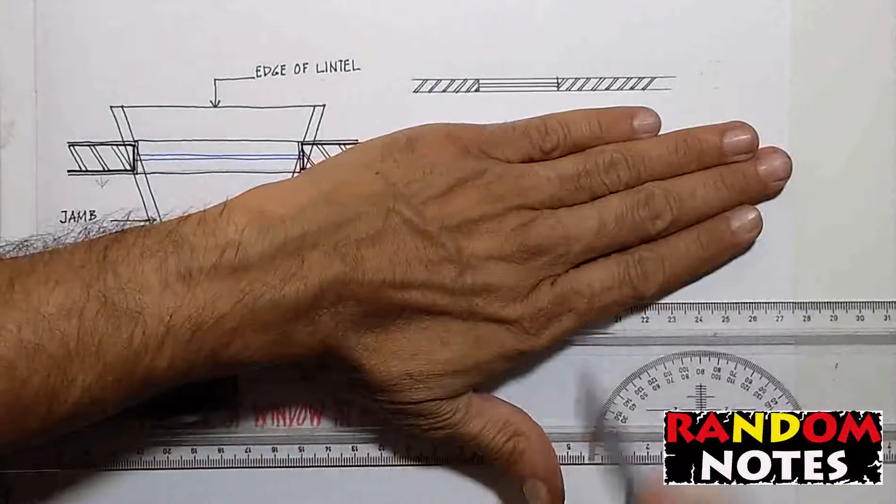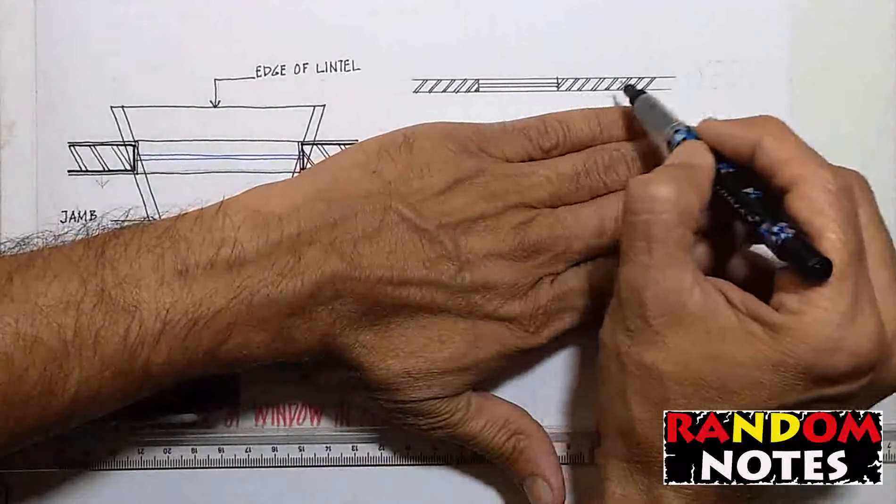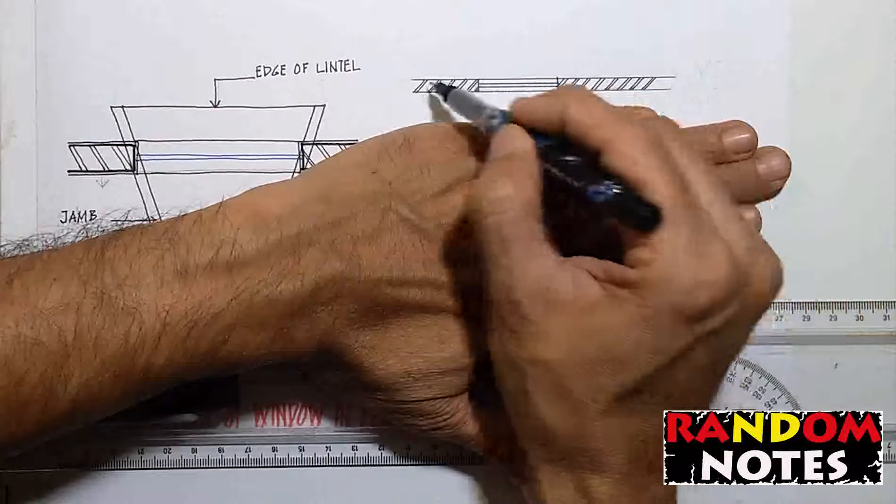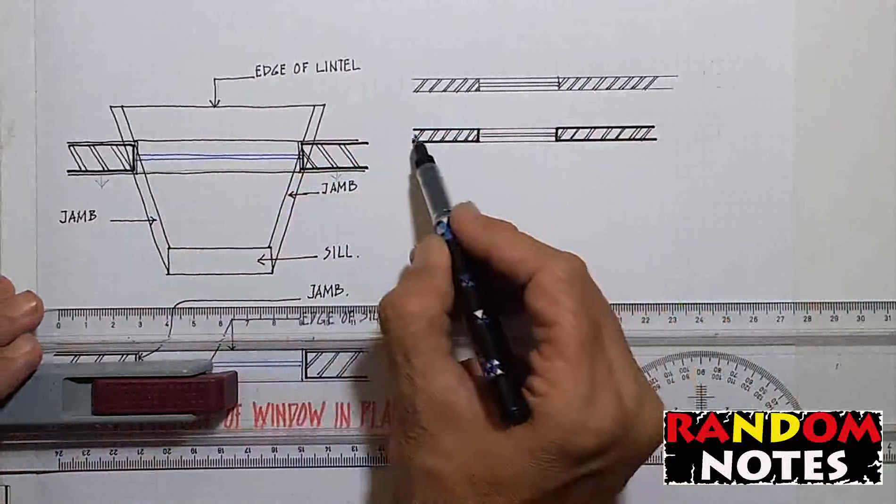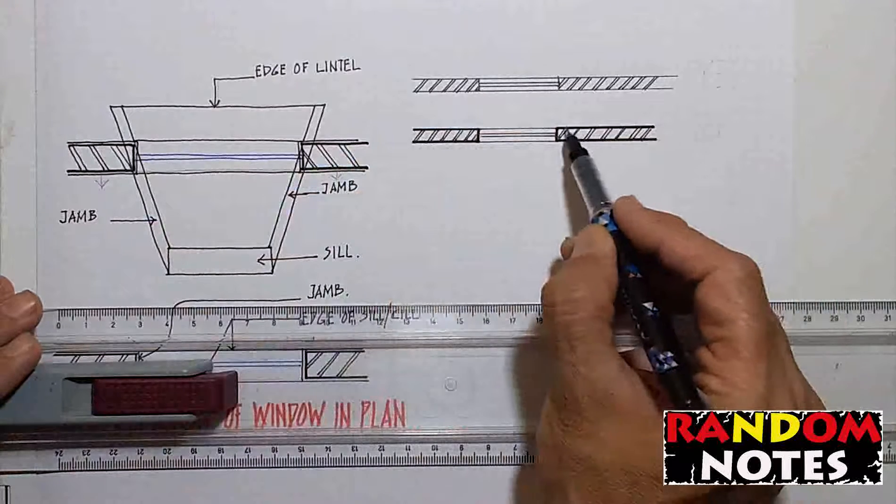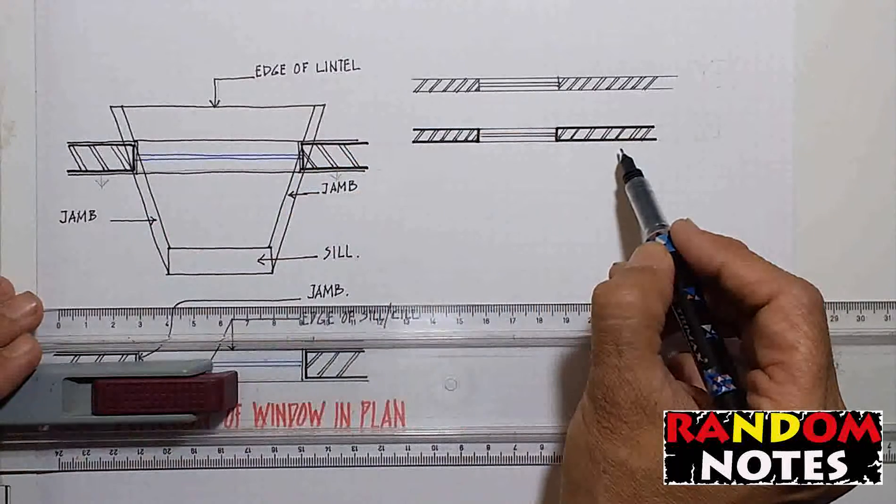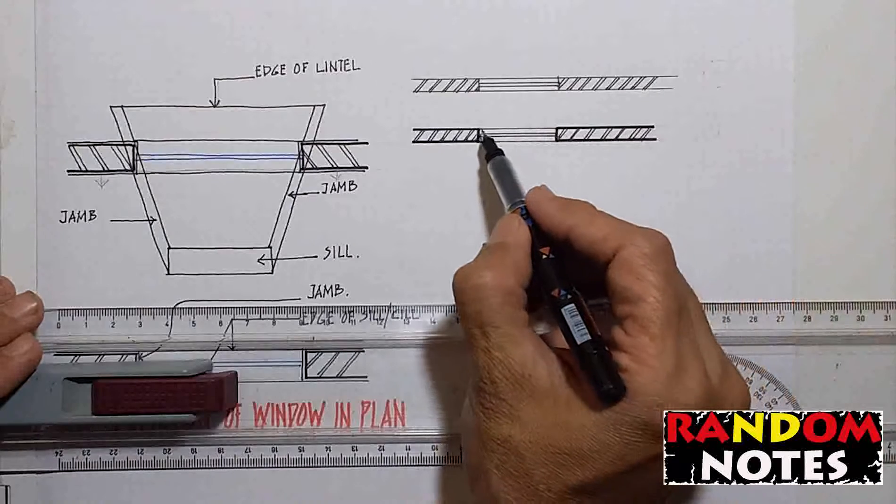In the first example, all building elements are drawn with the same line thickness. In the second example, variation in line thickness has been used depending on the elements getting cut or visible beyond. Example 2 is a good way of depiction. Example 1 is not so good.